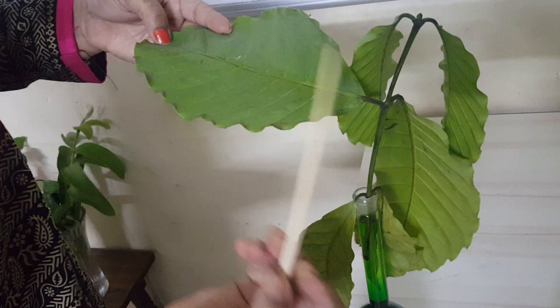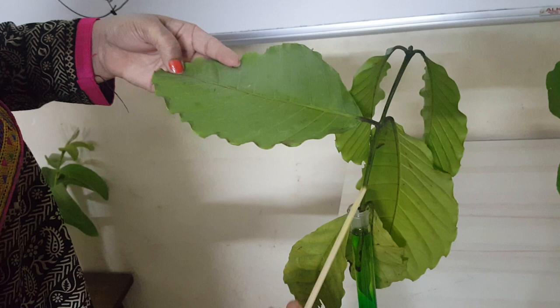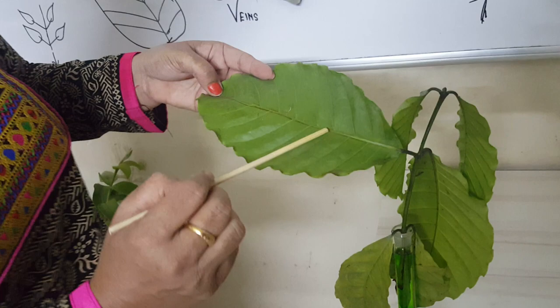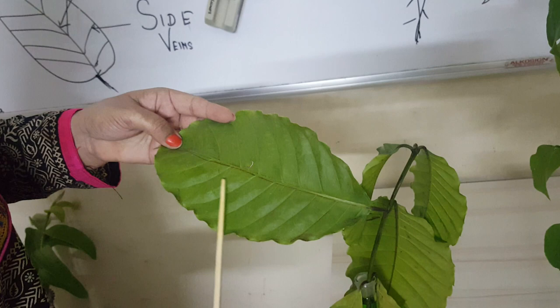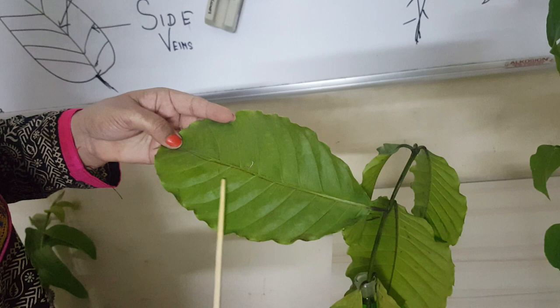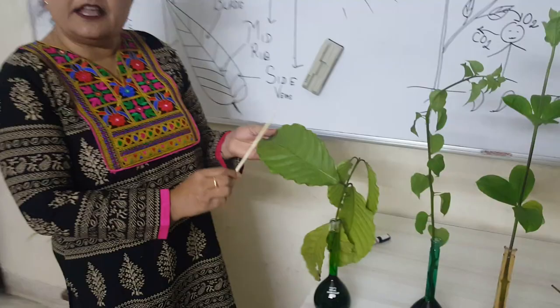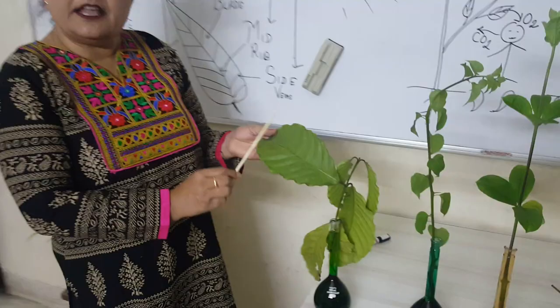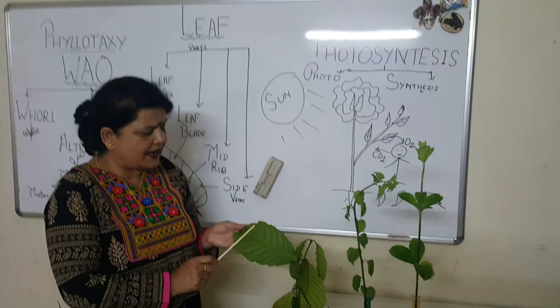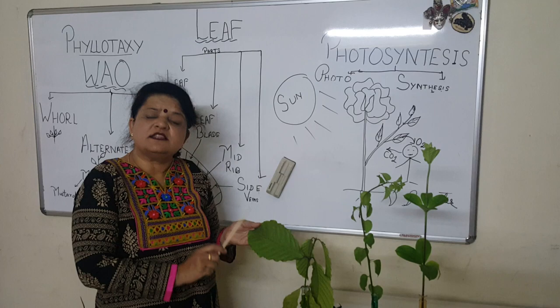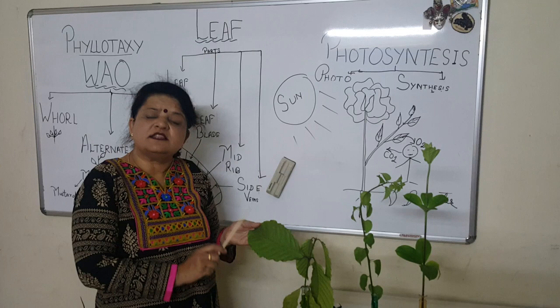Through the petiole, water from the stem is transferred to the leaf and all its parts. You can also see the side veins arising from the main vein, distributing water to the entire leaf. The food prepared by the leaf goes back to the stem through the petiole. The leaf is the kitchen of the plant — a mini food factory. It prepares food with the help of sunlight, water, and carbon dioxide. Leaves are green due to chlorophyll, the green pigment.